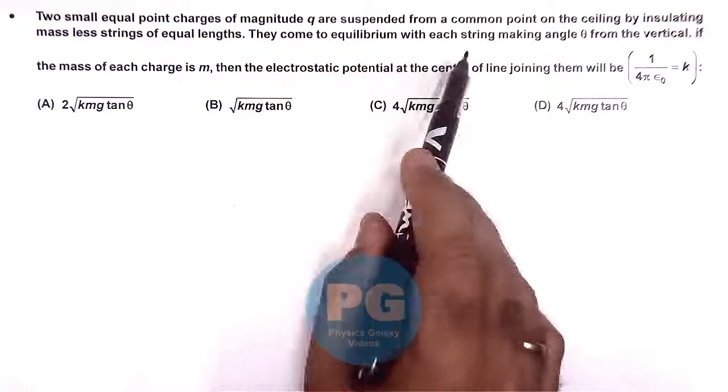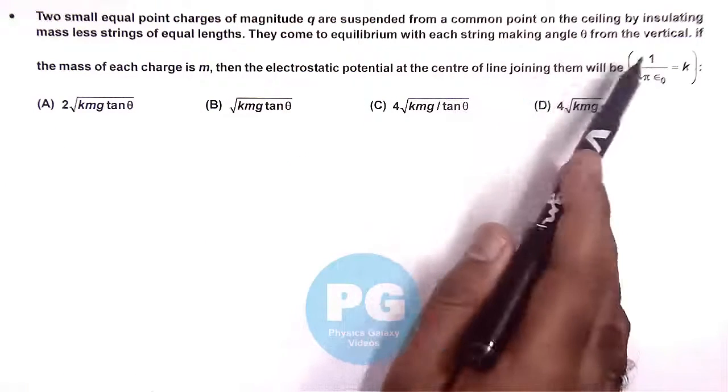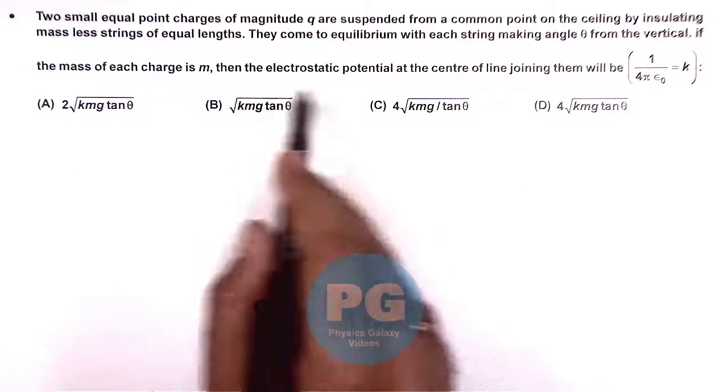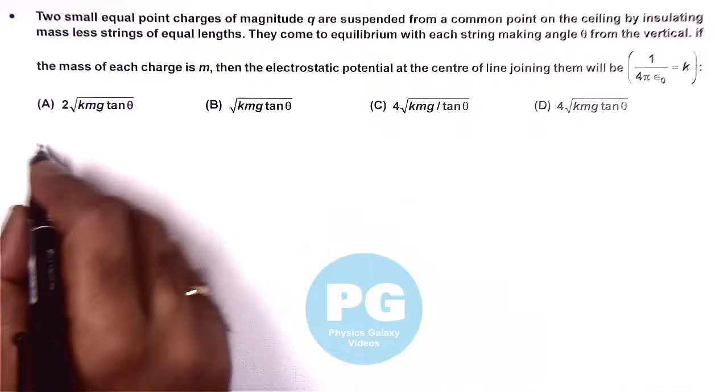They come to equilibrium with each string making an angle theta from the vertical. If the mass of each charge is m, then the electrostatic potential at the center of the line joining them will be...